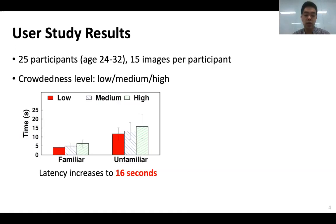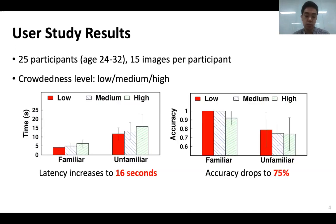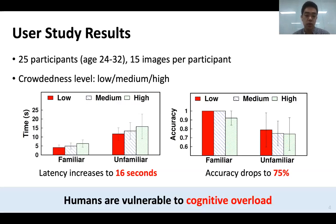Another interesting factor we found is that when finding a person whose face we are not familiar with, it takes longer, becoming as high as 16 seconds in crowded scenes. Similarly, we found that accuracy drops to 75% when finding an unfamiliar face in crowded scenes. So in summary, when finding a target in a crowded scene, we become cognitively overloaded and often fail to do the job successfully.